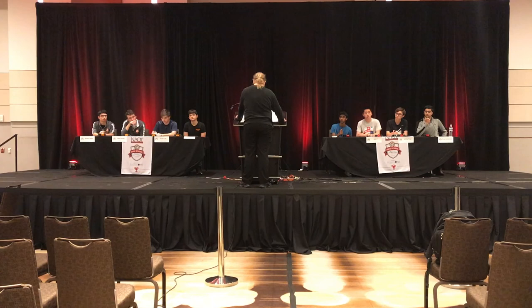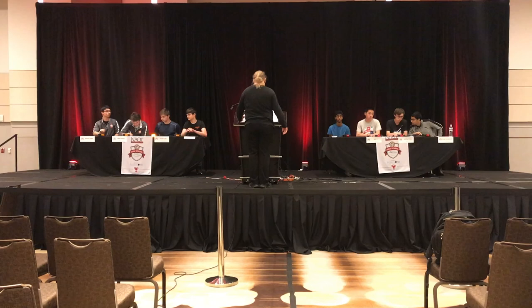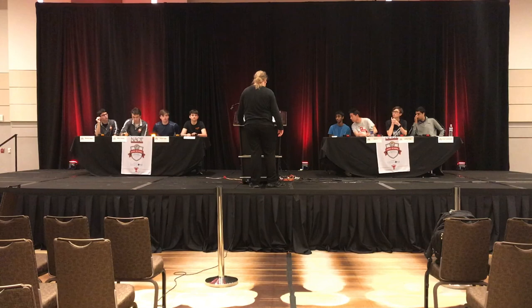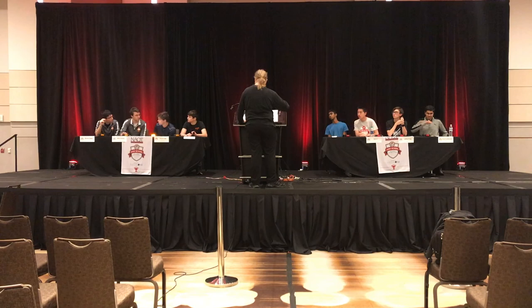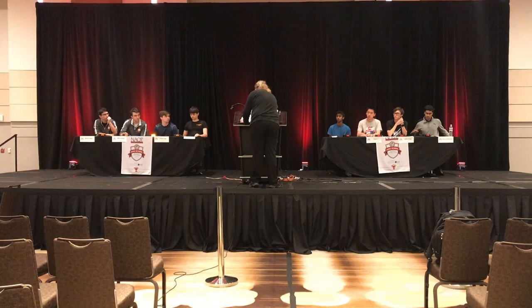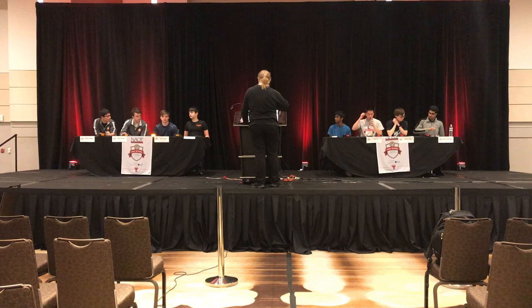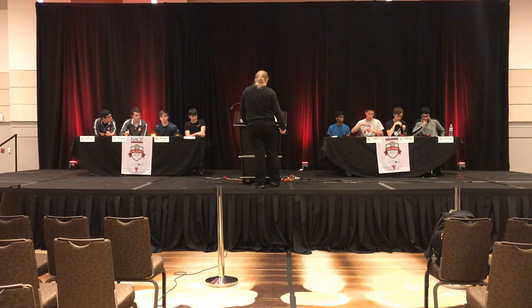In Europe, these products are regulated by an agency known as the COSC. For 10 points each, name these consumer products, extremely expensive versions of which include the Patek Philippe Sky Moon Tourbillon and the Audemars Piguet Royal Oak watches. Both Patek Philippe and Audemars Piguet are based in this mountainous European country known for its extremely accurate watches and clocks. Switzerland. The use of this mineral, whose regular oscillations allowed for very accurate timekeeping, caused a namesake crisis among Swiss watchmakers in the 1970s. Quartz. That's 20.